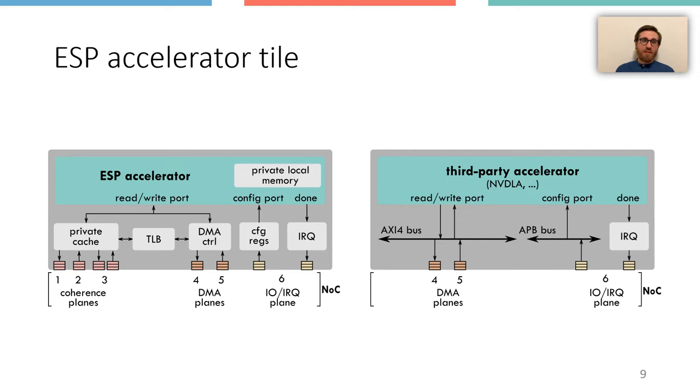For example, on the right, you can see that the third-party accelerator loses some of the socket services, but it still retains many of them such as the interrupt management or the runtime reconfigurability of the cache coherence.